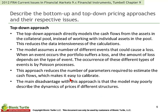As opposed to the top-down approach, which directly models the cash flows from the assets in the collateral pool instead of working with individual assets in the pool. This reduces the data intensiveness of the calculations. In the top-down approach, the model assumes a number of different events that could cause a loss. When an event occurs, the portfolio suffers a loss, and the amount of loss depends on the type of event. The occurrence of these different types of events is often characterized by a Poisson process. This top-down approach reduces the number of parameters required to estimate cash flows and makes it easier to calibrate.